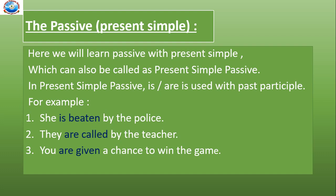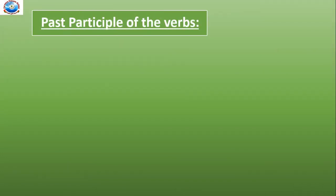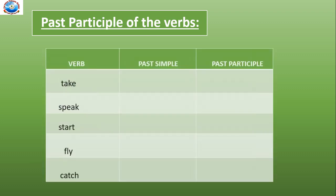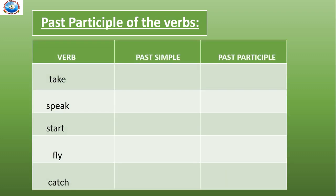Now let's learn the past participle of the verbs with the help of a table. On the screen, there is a table with three columns: first one verb, second past simple, and third past participle. Now we have to write the past simple and past participle of the given verbs. Let's start.